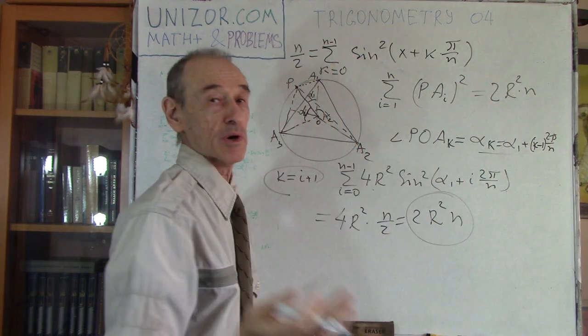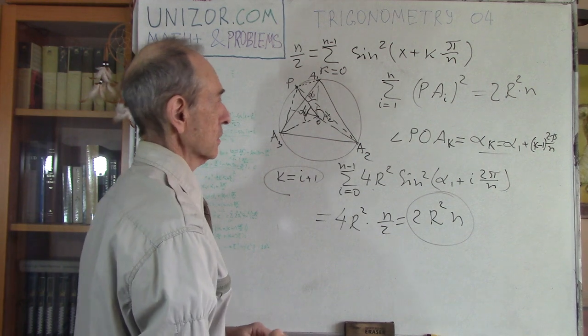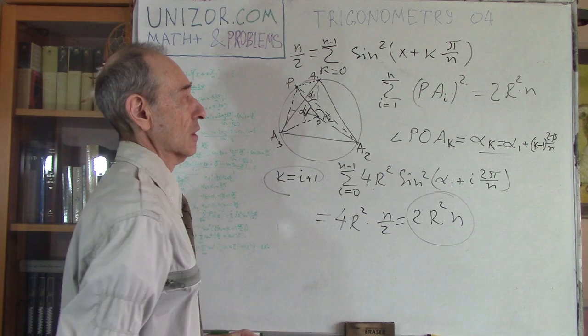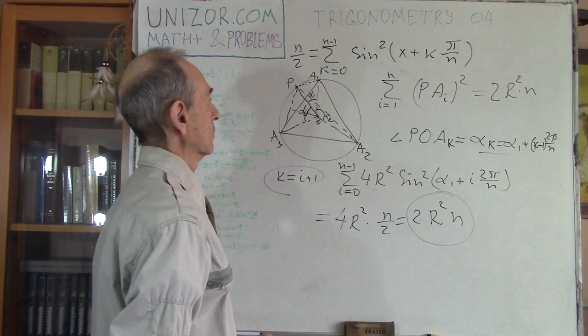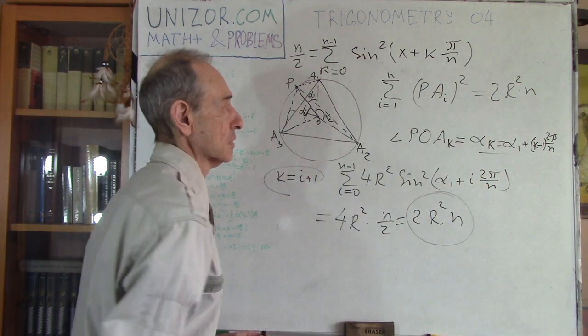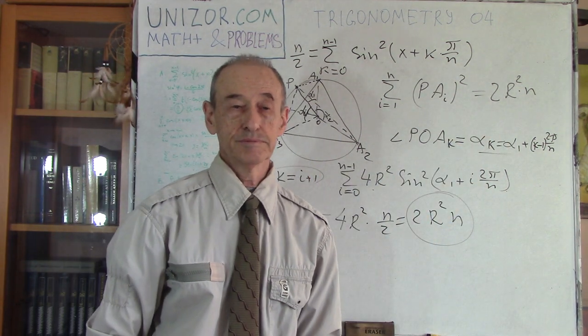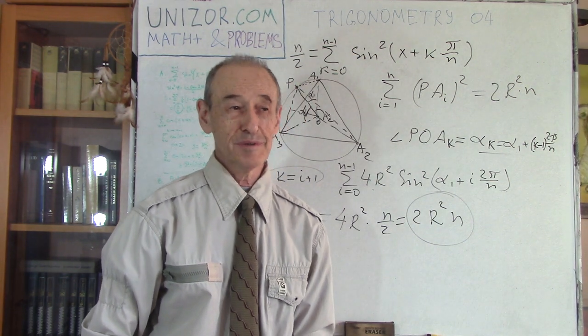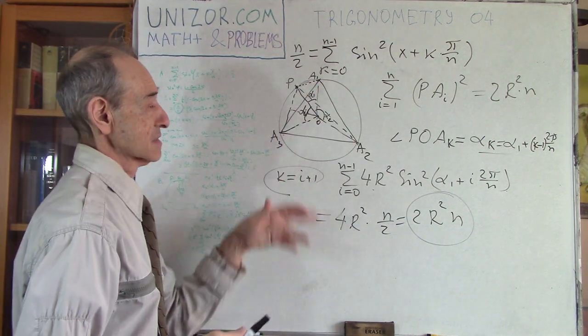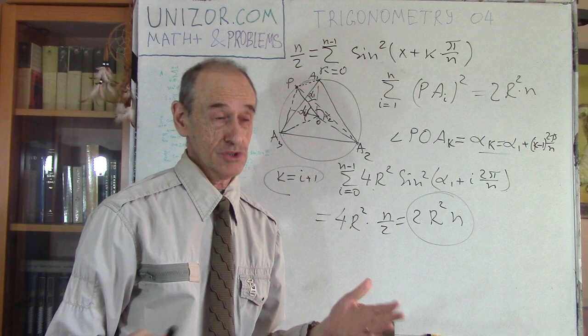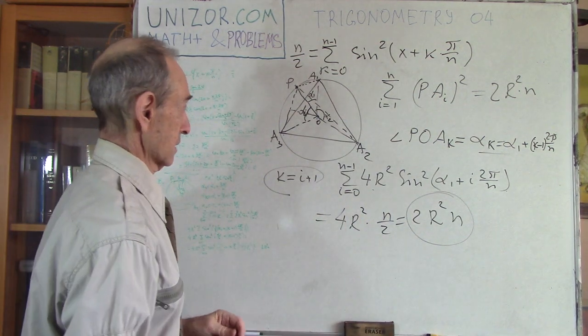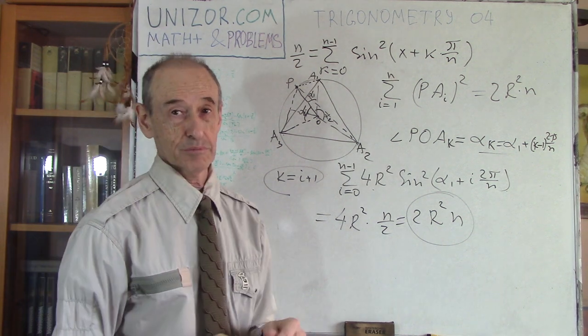Where n is the number of sides in our regular polygon. And, as you see, it's independent on the position of this point p. It depends only on the radius and number of sides in the polygon. It's quite remarkable to tell you the truth. I mean, I would not expect it. If somebody tells me that some of the squares of these distances is constant, it doesn't really depend on the position, well, I would be skeptical about this. Nevertheless, calculations show exactly this. Okay. So, that was my second problem.